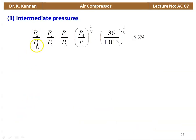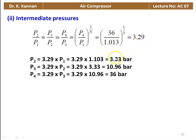For intermediate pressures, equal pressure ratio per stage: P2/P1 = P3/P2 = P4/P3 = (P4/P1)^(1/3) = (36/1.013)^(1/3) = 3.29. So P2 = 3.29 × 1.013 = 3.33 bar; P3 = 3.29 × 3.33 = 10.96 bar; P4 = 3.29 × 10.96 = 36 bar. Pressure at end of first stage = 3.33 bar, second stage = 10.96 bar, third stage = 36 bar.